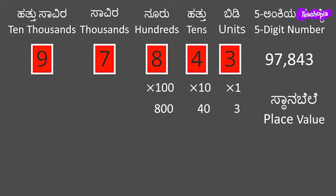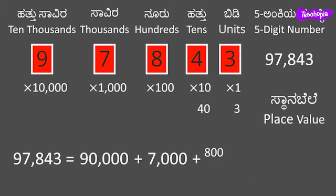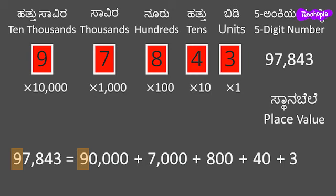The digit in the thousands place represents groups of 1000 objects. The digit in the thousands place is 7 and its place value will be 7000, as it represents 7 groups of 1000 objects. The digit in the ten thousands place represents groups of 10,000 objects. For the given number, the expanded form will be the sum of the place values of the digits. So, 90,000 plus 7,000 plus 800 plus 40 plus 3. We can observe that the digit 9 is in the ten thousands place and hence we have its place value as 90,000.